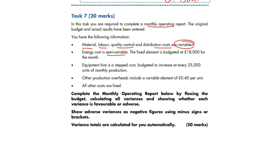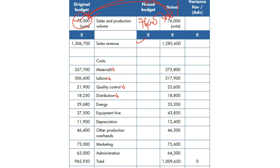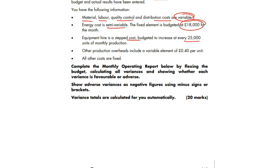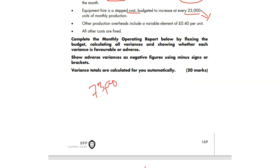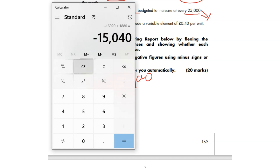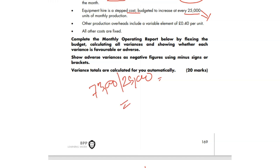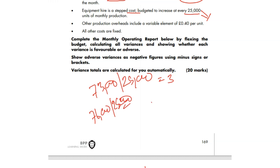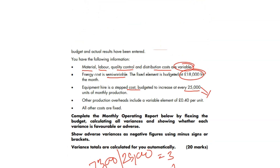Energy is semi-variable: fixed element is £18,000, and the rest varies with activity. Equipment is a stepped cost, budgeted to increase every 25,000 units of monthly production. For the original budget of 73,000 units: 73,000 ÷ 25,000 = 2.92, so 3 steps. For 76,000 units (actual/flexible): 76,000 ÷ 25,000 = 3.04, so 4 steps. Other production overheads include a variable element of 40 pence per unit. All other costs are fixed.